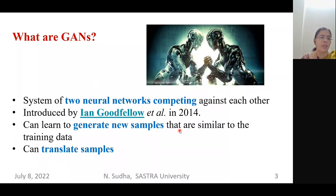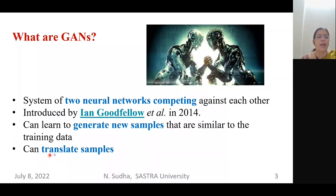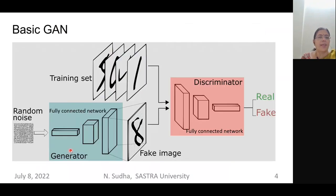The GAN can learn to generate new samples that are similar to the training data. As a neural network, it is trained with particular data and then generates new samples similar to that data. It can also translate the samples, which is one important property of the GAN.